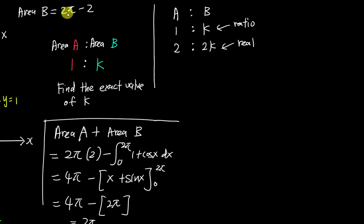We got Area B is 2π minus 2, so therefore I can say 2k equals 2π minus 2, and I can know my k is π minus 1. This is my final answer.